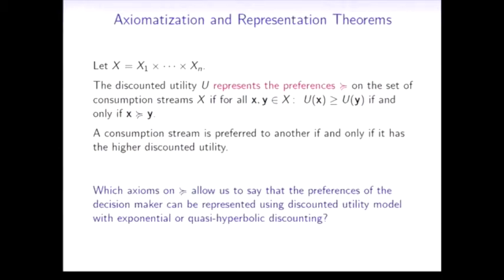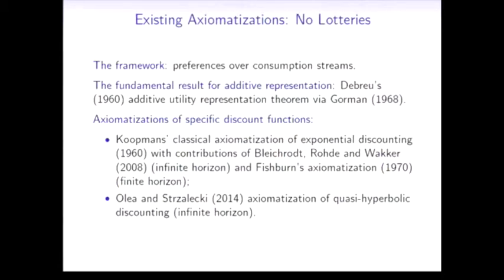The question is: what type of axioms allows us to say that the preferences of a decision maker can be represented by a discounted utility model with discounting in a particular form, exponential or quasi-hyperbolic? Of course I'm not the first person interested in this question. I'd like to look at the existing axiomatization systems first without going into much detail.